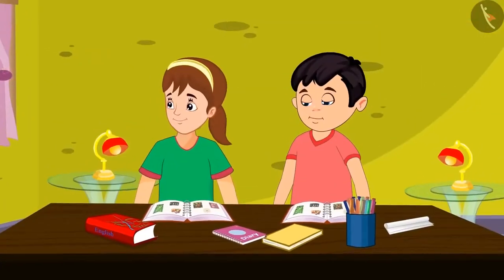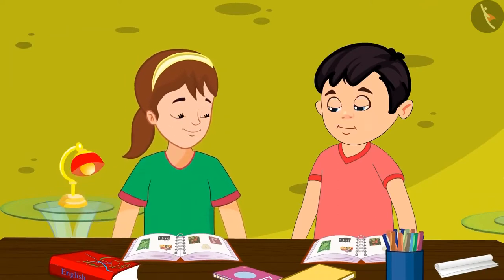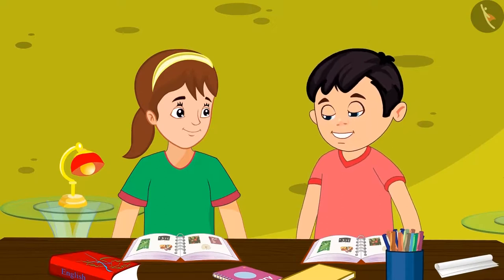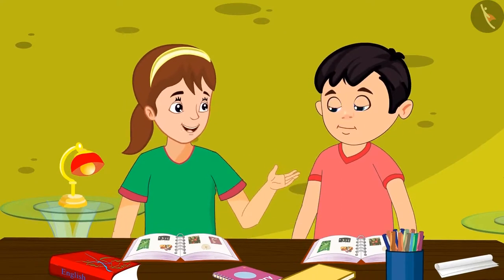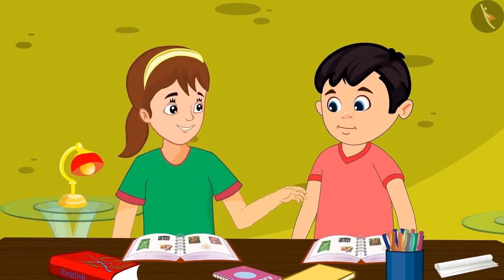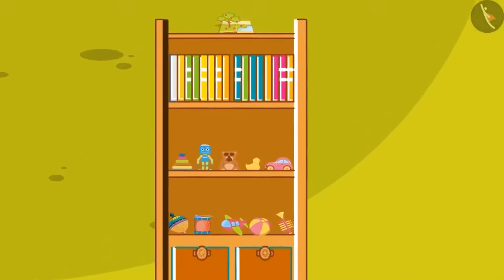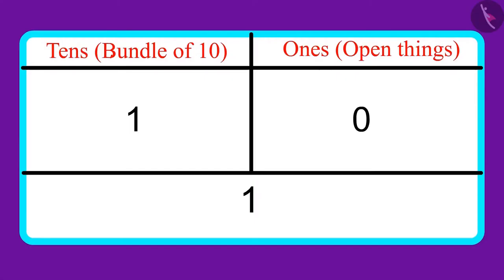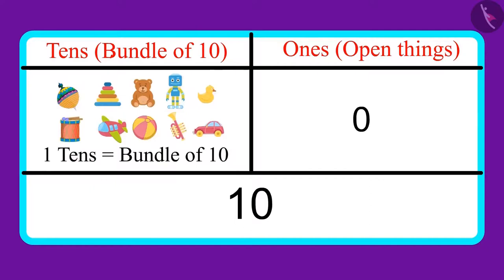Just then, Aarti happens to look at the toys kept in Chotu's cupboard. Oh, wow! You have so many colorful toys. How many toys would these be, Chotu? Come, let's play a game where I will only tell you how many ones and tens are there in the number of objects and you will have to tell that number. There are one ten and zero ones in the number of toys. Is this wrong, Chotu? One ten and zero ones means you have just one toy — but there are many toys in the cupboard. No, Aarti. It doesn't mean one. One ten means a bundle of ten. That means I have ten toys. Did you understand?